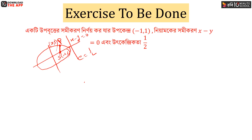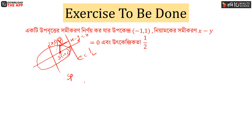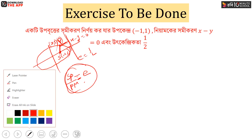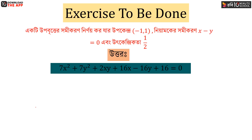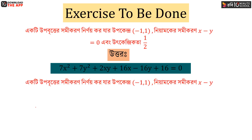P is equal to xy. So P is equal to xy. You can easily see the normal calculation, and then you can practice this. We will give you this example: 7x² plus 7y² plus 2xy plus 16x minus 16y plus 16 equal to 0. The law is 1, 1, and x minus y.